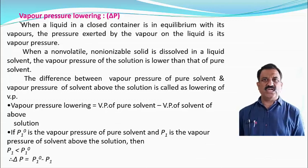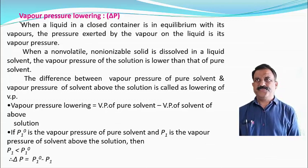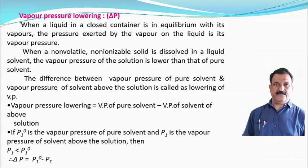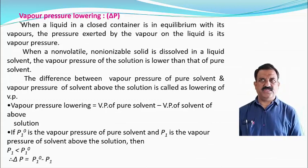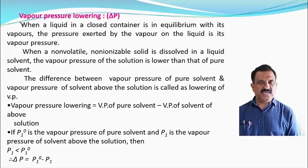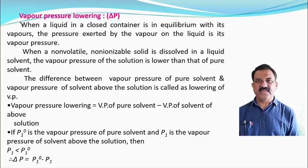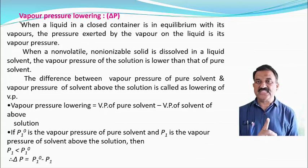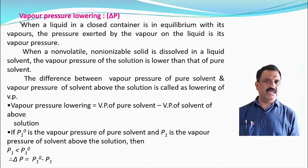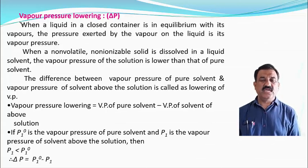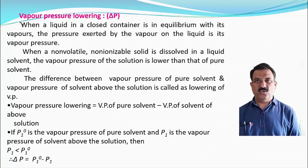The first colligative property is vapour pressure lowering. The lowering or decrease in vapour pressure is denoted by delta P. Delta means a change, P means vapour pressure — so delta P is a change in vapour pressure. Since the vapour pressure reduces or decreases, it is known as vapour pressure lowering.